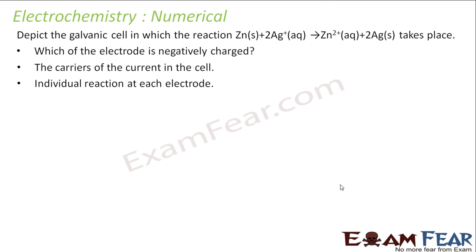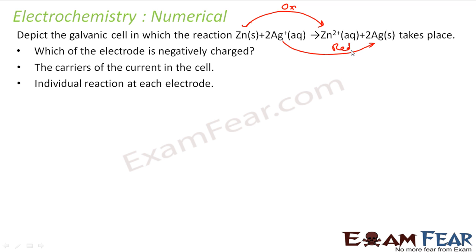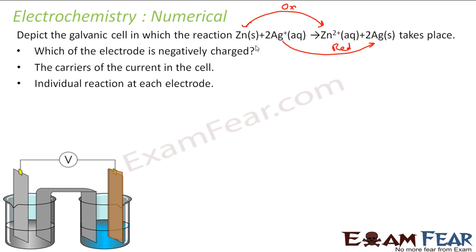The next question asks us to depict the galvanic reaction where zinc is oxidized to Zn2+ and Ag+ is reduced to silver. We need to find which electrode is negatively charged, the carrier of current in the cell, and individual reactions at each electrode. As per IUPAC convention, anode is where oxidation occurs and cathode is where reduction occurs.